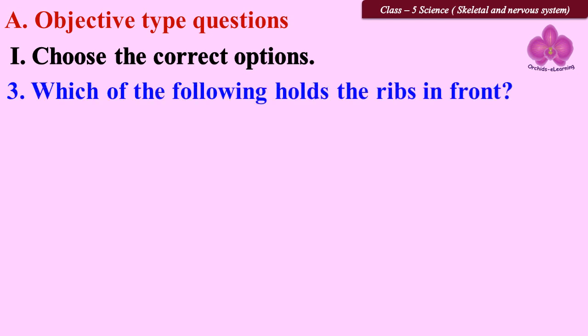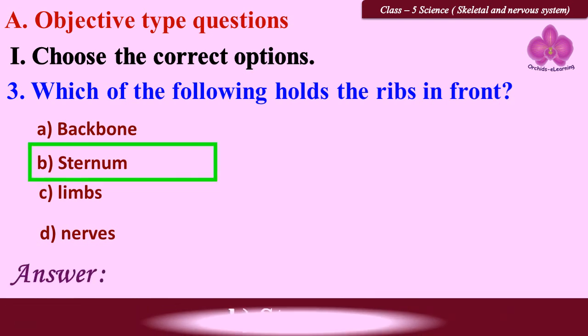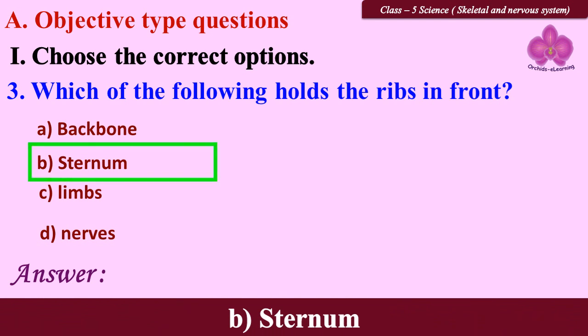Question 3: Which of the following holds the ribs in front? Options: A. backbone, B. sternum, C. limbs, D. nerves. Answer: B. sternum.